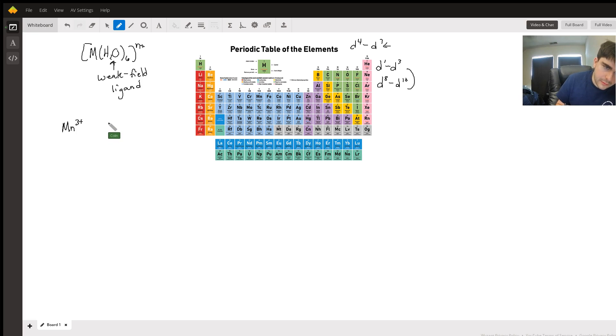So we have 3s2, or excuse me, 4s2, 3d5. That's supposed to be 10, not 5. That's supposed to be 5, not 7. All right, so 3d5. This is the ground-state electron configuration for manganese.